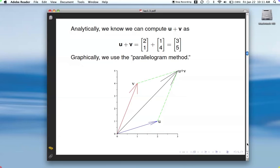Analytically, we know we can compute u plus v in this fashion, right? Just sum the like terms, 2 plus 1, 1 plus 4, give you 3, 5.